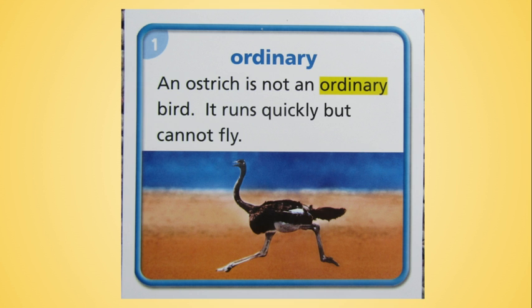Our first word is ordinary. Let's take a look at our sentence. An ostrich is not an ordinary bird. It runs quickly but cannot fly. Well, an ordinary bird can fly. So if this is not an ordinary bird, it must be special or different or unique. But an ordinary bird is not special or different in any way. Can you think of words that have the same meaning as ordinary? Simple, plain.